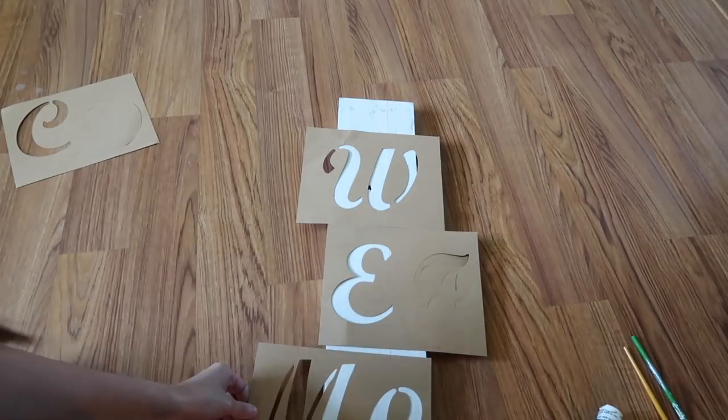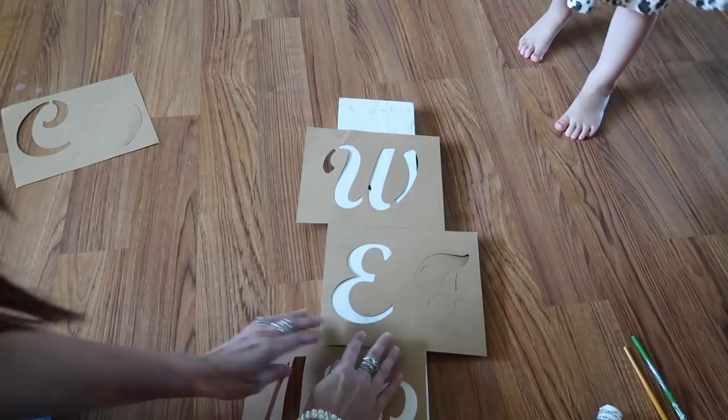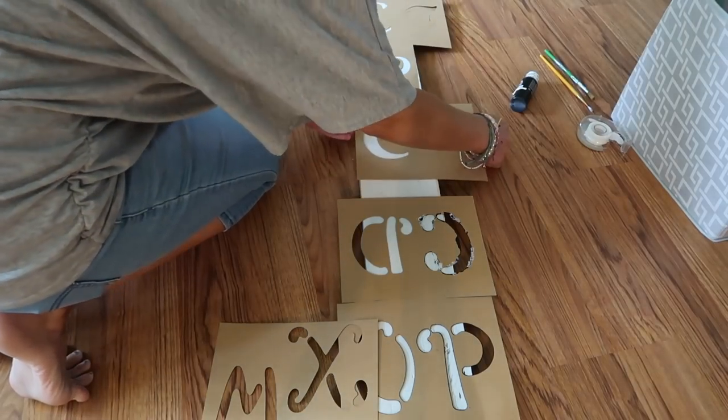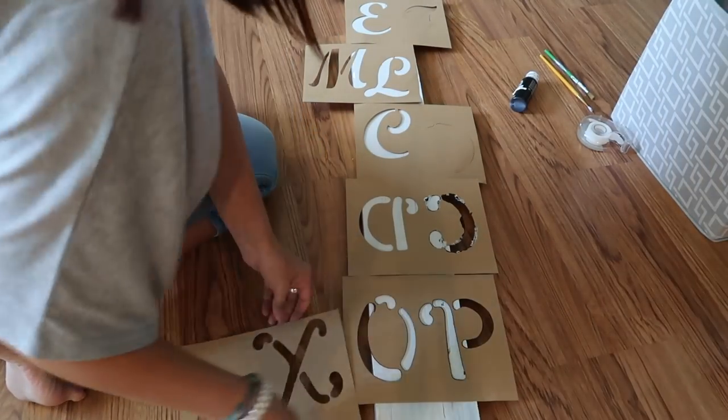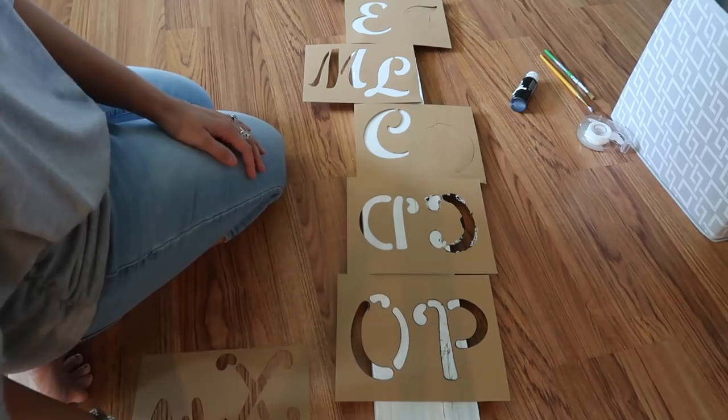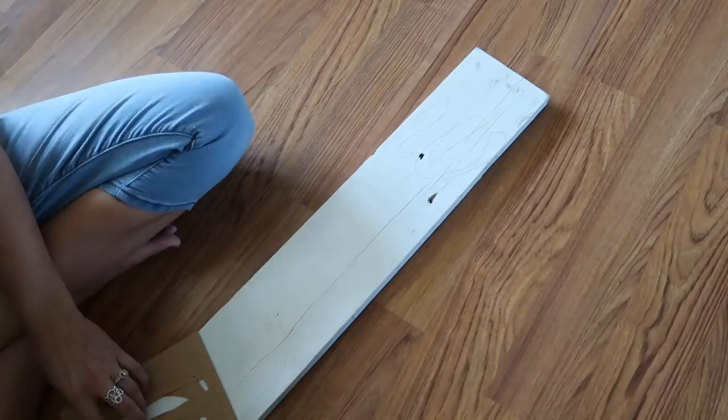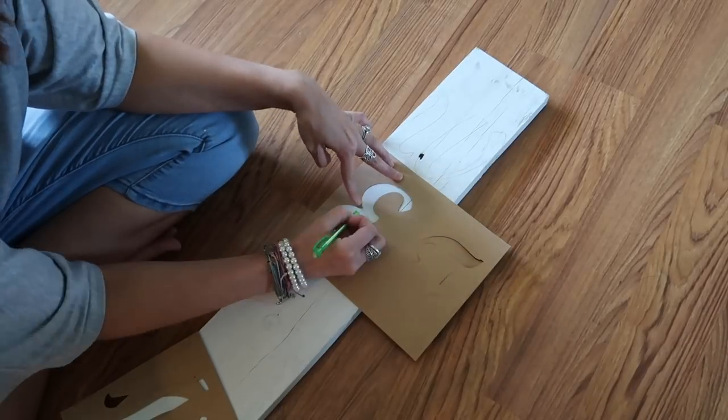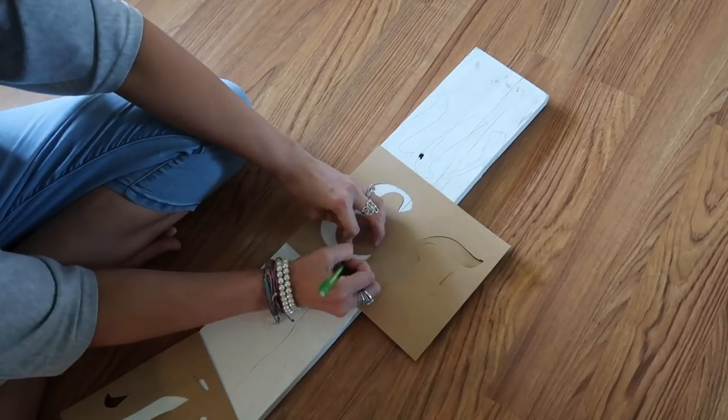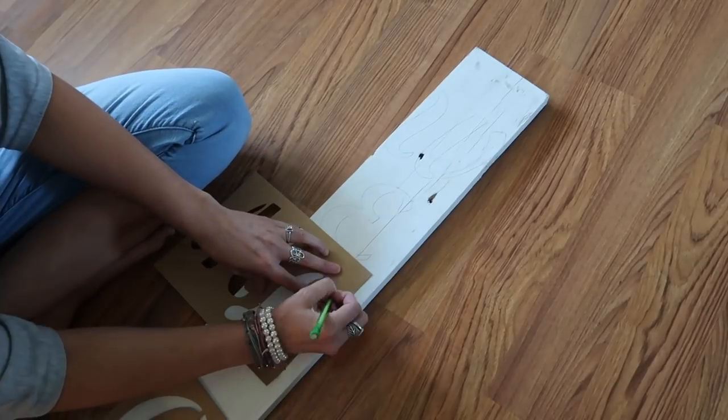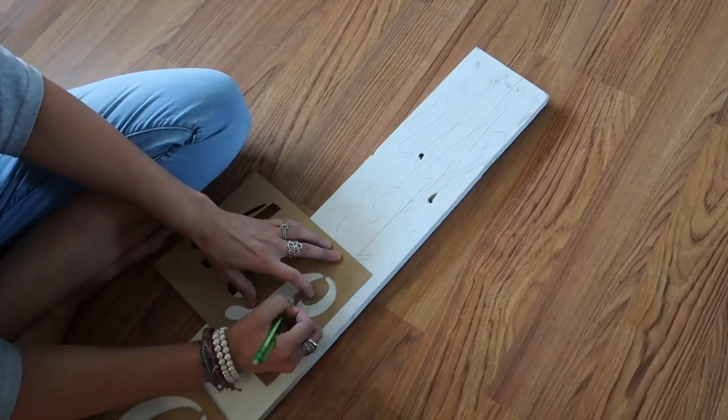And then now I'm just going to take these stencils and then line them up on my board. I already have this so I'm just reusing it, that's why it's already white. And then I know it doesn't say welcome but I really want to space everything out. Like I said I got these stencils from Hobby Lobby a few years ago. They are 5 inches long and I really like these. I think this works really great.